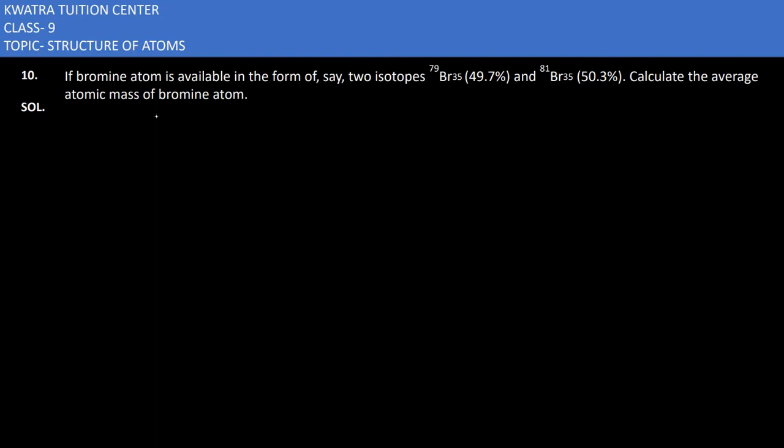The 10th part here is defining that if bromine atom is available in the form of, say, two isotopes. Two isotopes may exist. To calculate the average atomic mass, the atomic mass of both should be known.